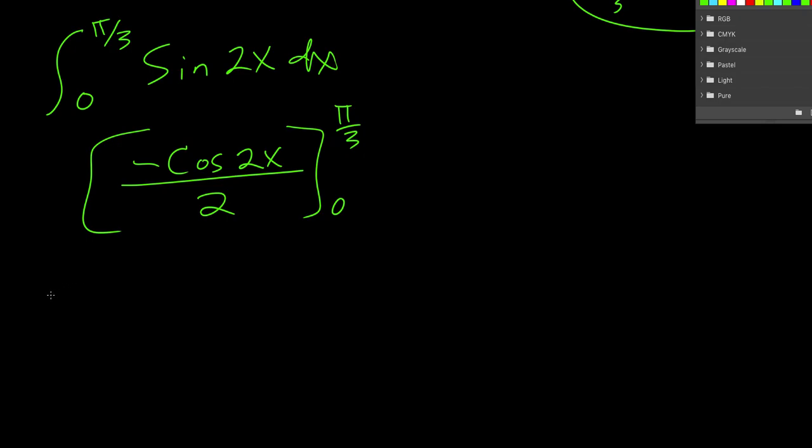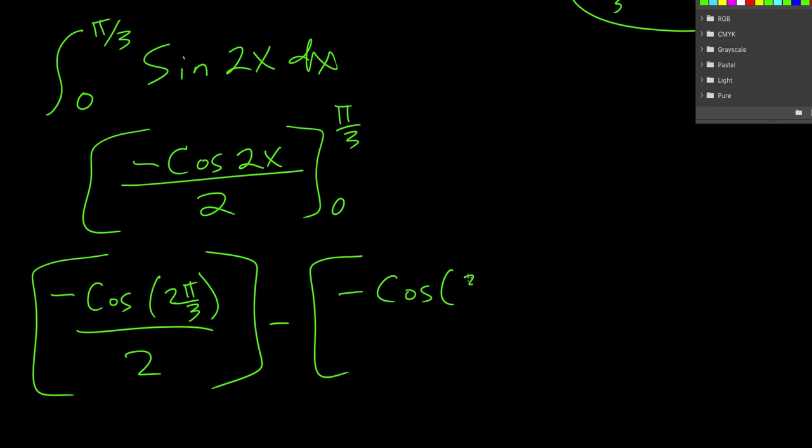We evaluate that from pi thirds to 0. So we plug in the top value. So we get negative cosine of 2 pi thirds over 2. And that entire thing is subtracted negative cosine of 2 times 0 over 2. So if we look at our cosine graph, this is really just cosine of 0. Cosine of 0 is just 1. And so this is like negative 1 half in this bracket.